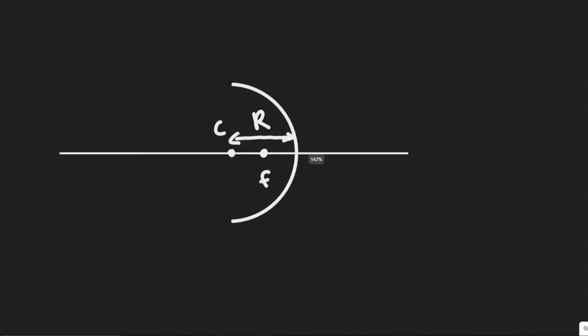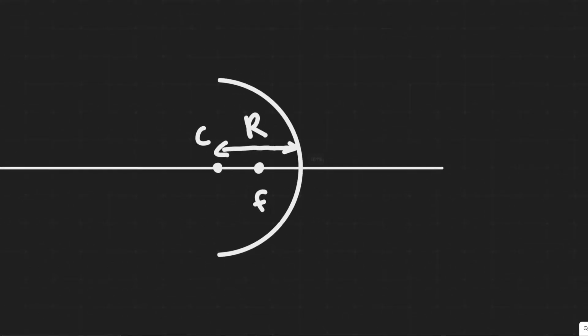As always, you want to draw what's going on here. We know we have a concave mirror, so it's going to be inwards like this, shaped like this, not convex, which would be like this.